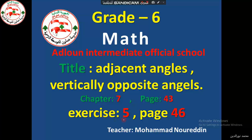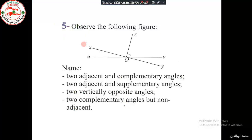Exercise 5 on page 46. Observe the following figure and name two adjacent and complementary angles. Memorize that complementary means their sum is 90 degrees. Then find two adjacent angles that are supplementary — supplementary means the sum of two angles is 180 degrees.